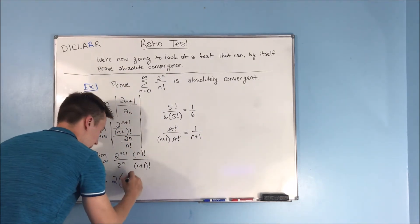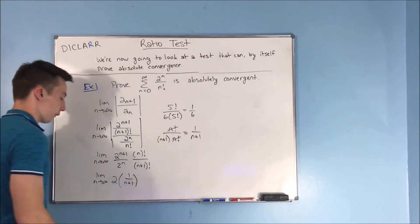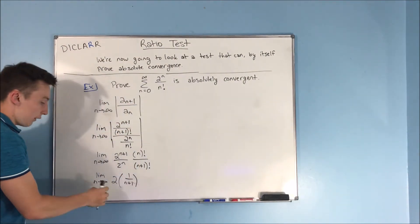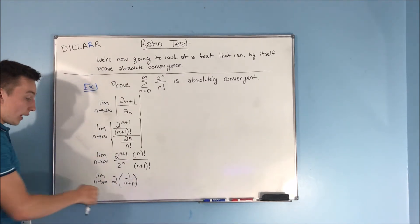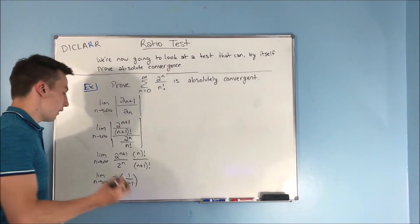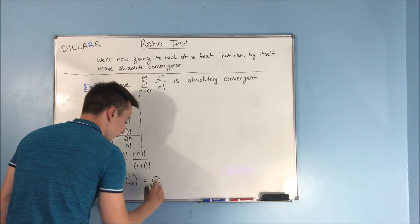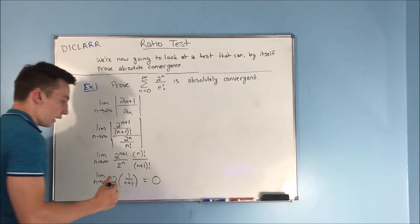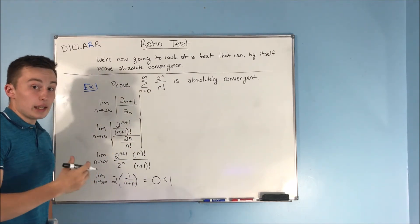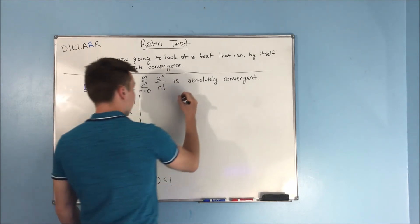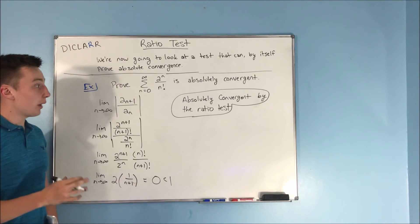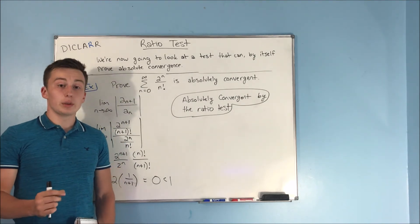So now we just have to figure out our limit here. We have two times one over n plus one. As n approaches infinity, you're going to get an infinitely large denominator, and that means that this limit is going to go to zero. And zero is less than one, which means that this series is absolutely convergent by the ratio test. And we're going to do more example problems in the next video, but that is going to do it for this one.